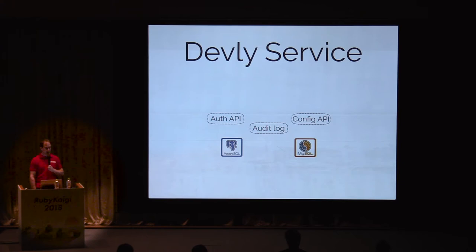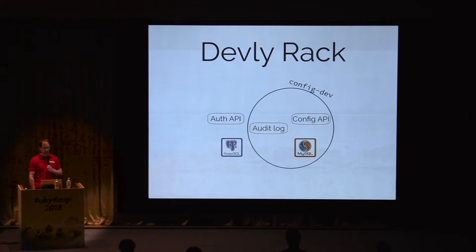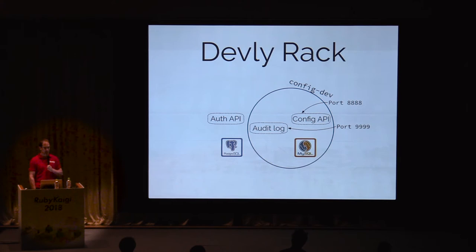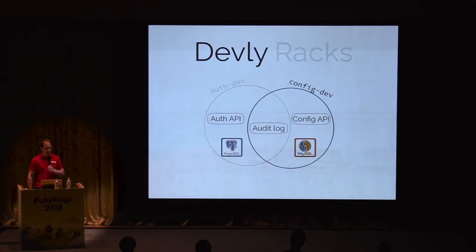We'll create a few more services for our applications, including the authentication API, the configuration API, and some databases they use. If we're going to work on the configuration API, we can create a rack containing only the services it needs: a MySQL database, the audit log, and the config API services. The rack can customize a service — we expose ports for a few services to the host OS to connect to from the browser. You can also set environment variables or mount different files to change the behavior of the service.